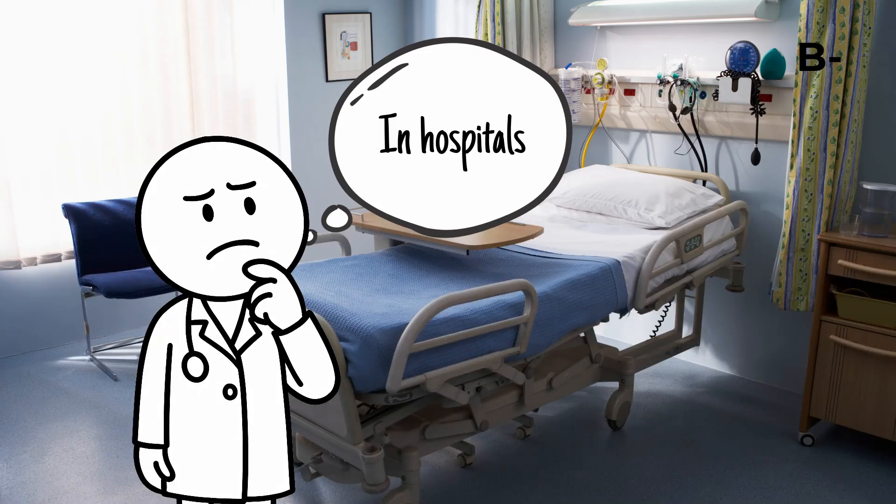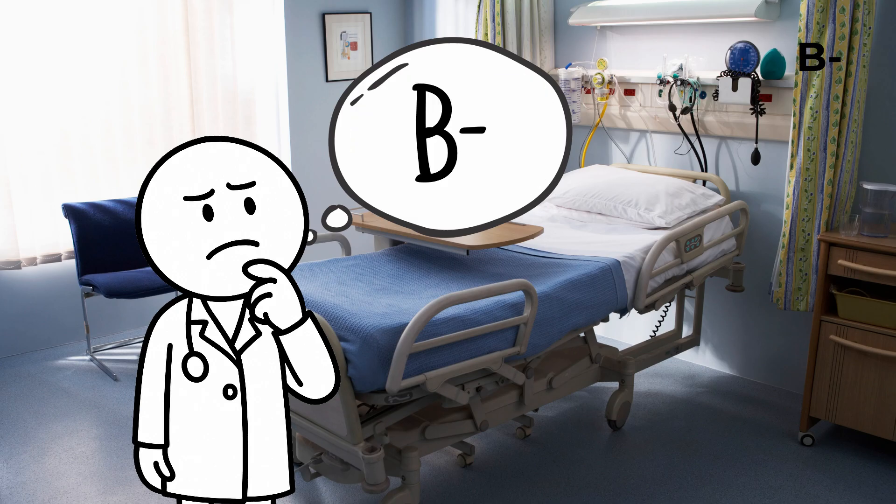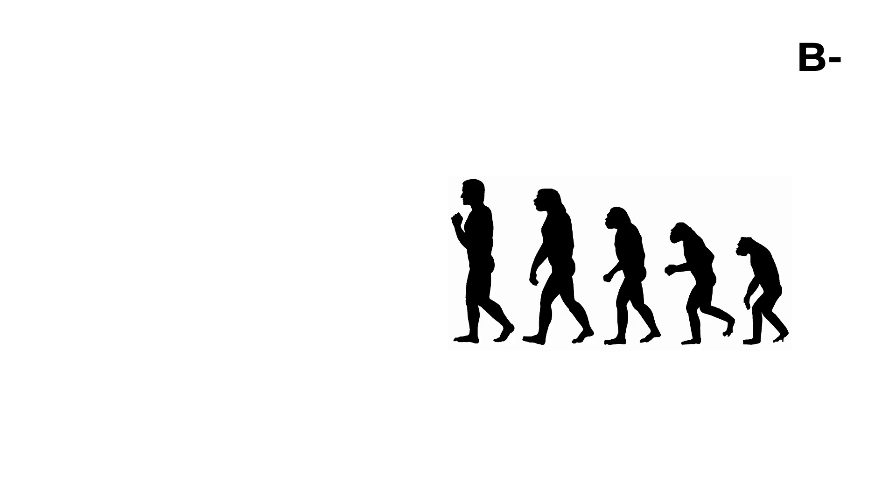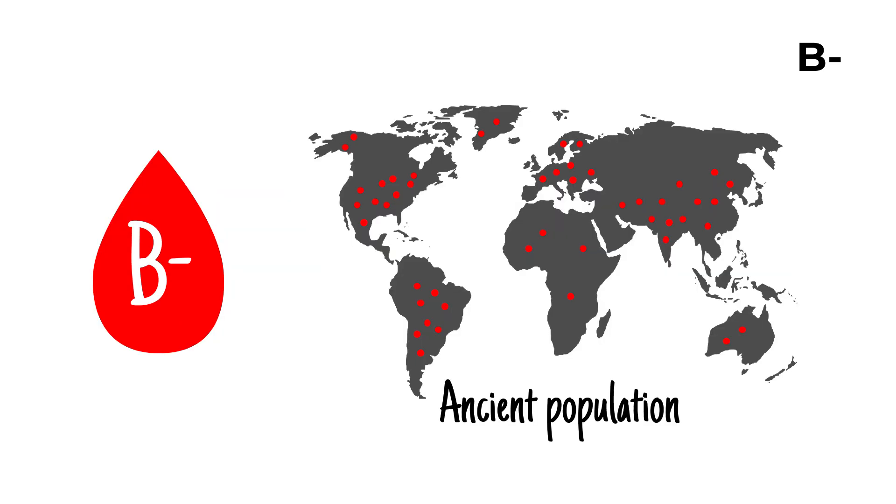In hospitals, this scarcity means that B negative donations are carefully managed and considered high priority for patients who depend on them. From an evolutionary perspective, type B blood likely spread unevenly among ancient populations. It reached higher frequencies in some parts of Asia but was far less common in Africa and Europe, and it was historically almost absent in the Americas.